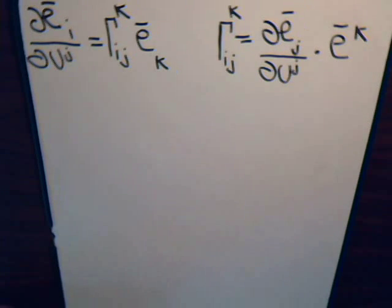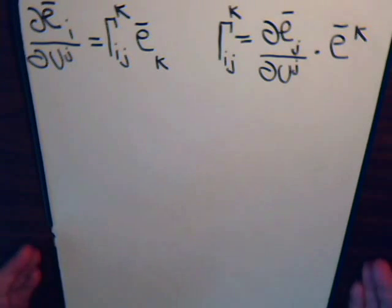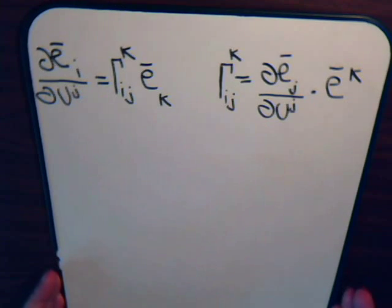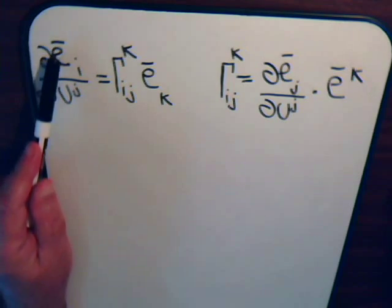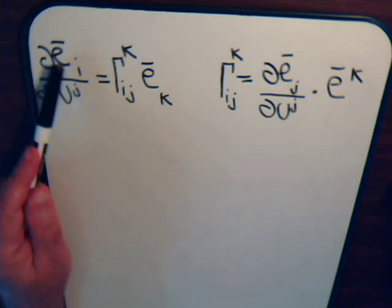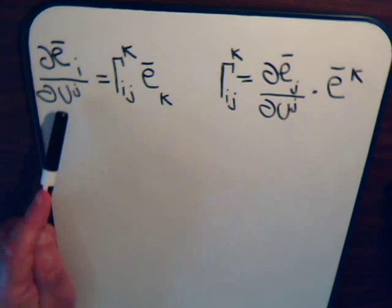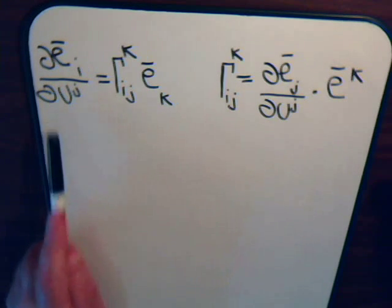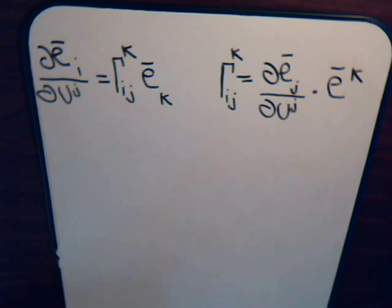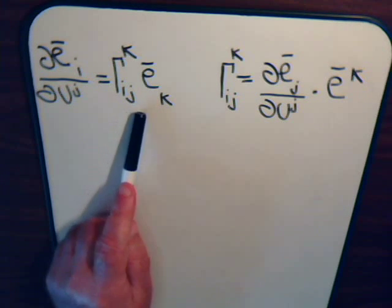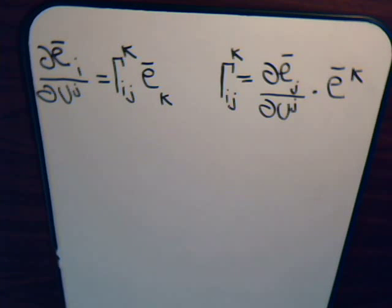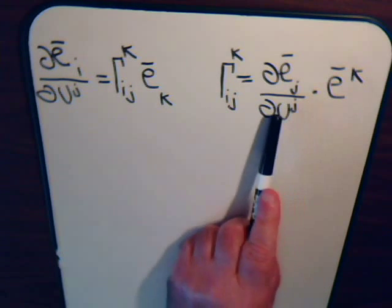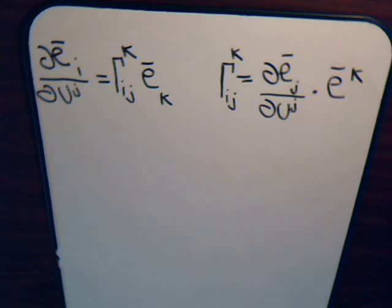In video number 17, we derived these equations, where we have the partial of a tangential vector for a curvilinear coordinate — we're taking the partial derivative of it with respect to one of the curvilinear coordinates — and we get this equation. This is the Christoffel symbol, and we can find its value by taking this dot product. This was all the subject matter in video 17.